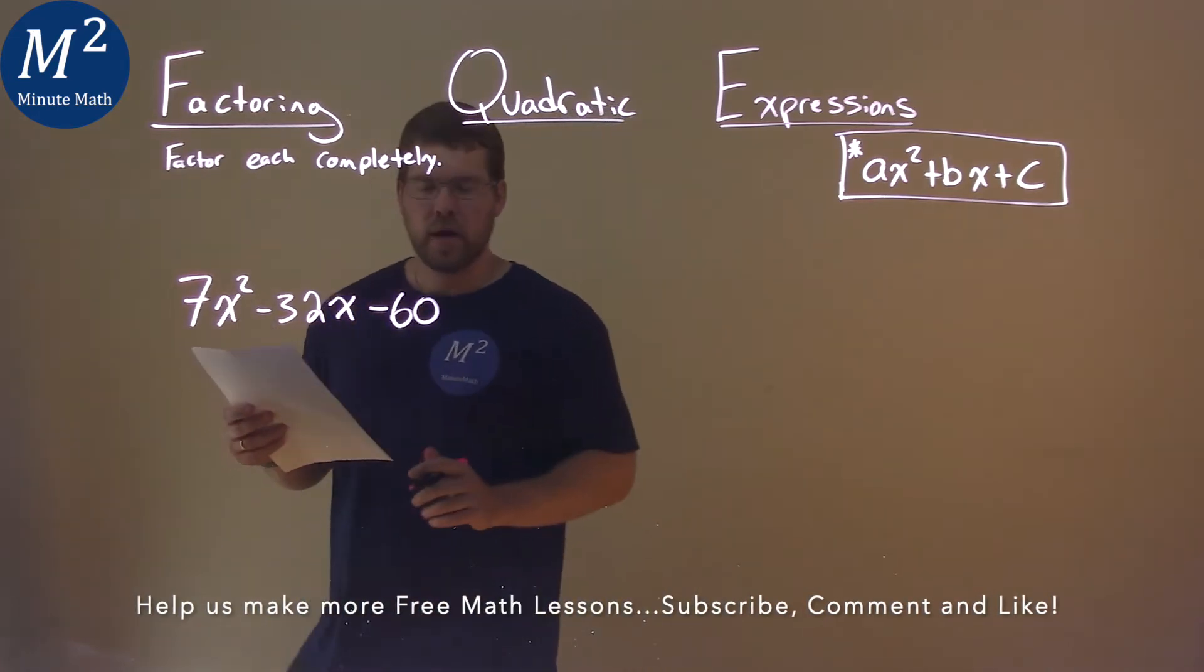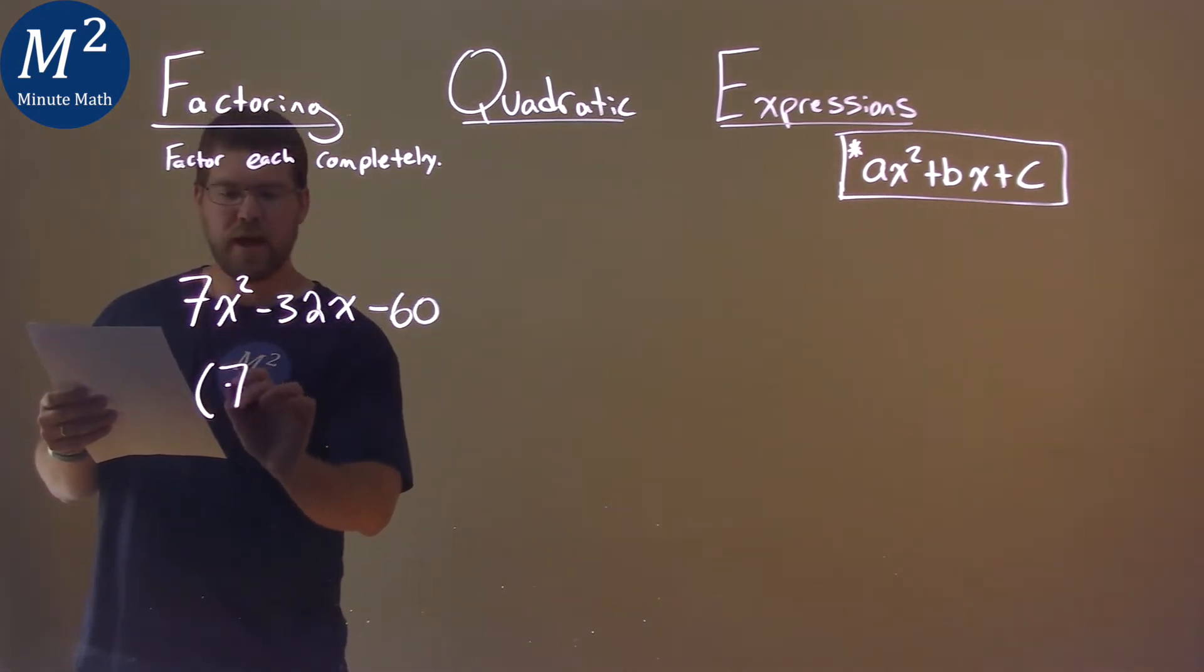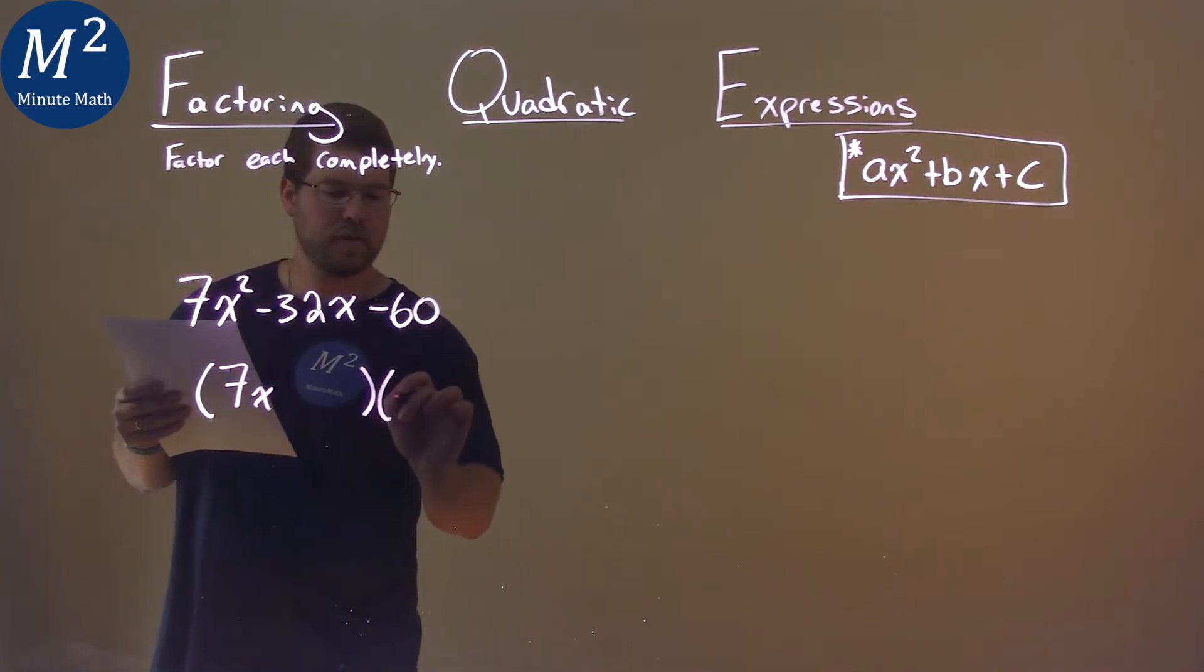My a value has a prime number, 7. So we know it's some form of 7x here, times just a single x value.